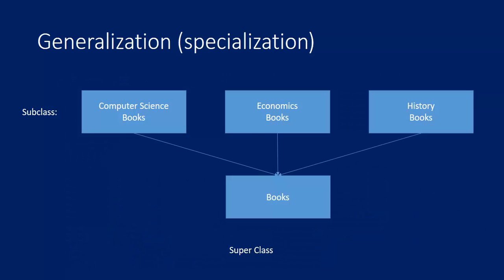There is a concept called generalization. In a library, there are different kinds of books: competition books, economics books, history books, and so on. These are all subclasses, and 'books' is the superclass. If we store all common attributes of these subcategories together under 'books', that is called generalization — all subcategories are merged into a particular superclass.